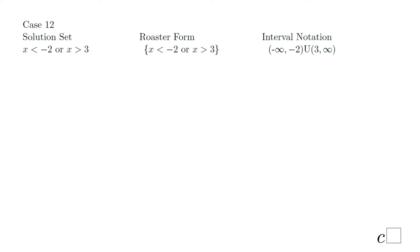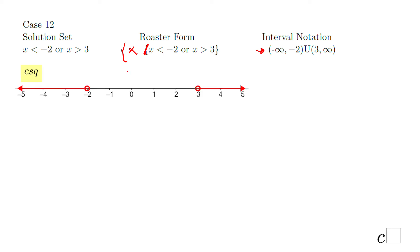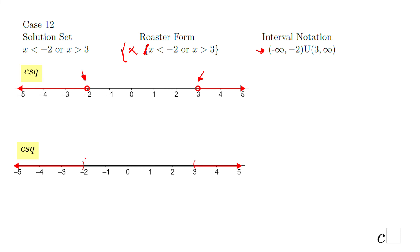Case twelve: x less than negative 2 or x greater than 3. Roster form: x when x is less than negative 2 or x is greater than 3. The interval notation is very similar to the previous one — the only difference is we have parentheses at negative 2 and 3, because there is no equal sign. The graphical solution is very similar; just be sure to use empty dots or parentheses.